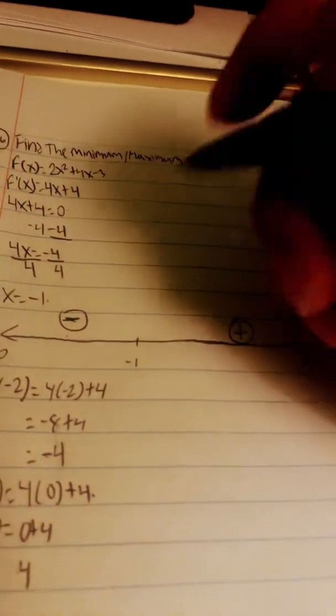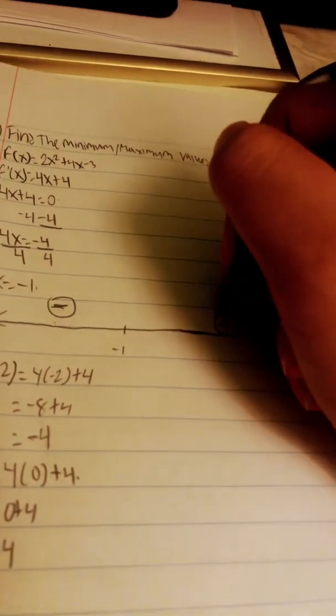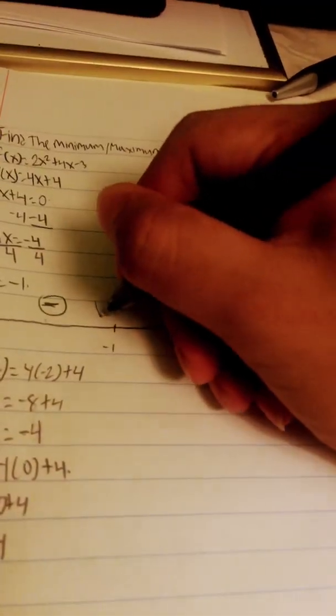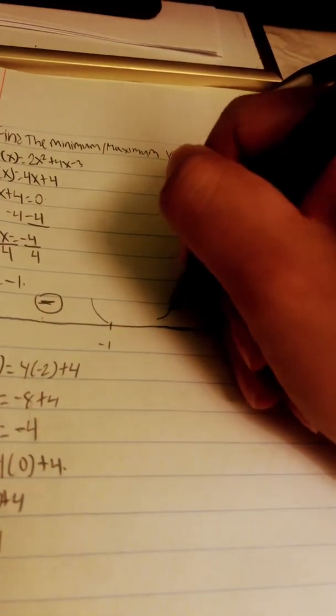So in between, so here it is decreasing, and over here it's increasing. So there is a minimum, because over here it's decreasing, over here it's increasing.